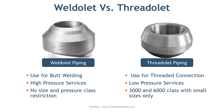The second difference is the use case. Threadolet is used for small size piping with low pressure applications. There is no such restriction in the case of weldolet — it can be used for high pressure applications as well.